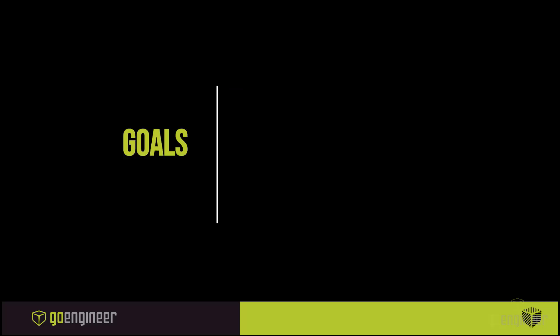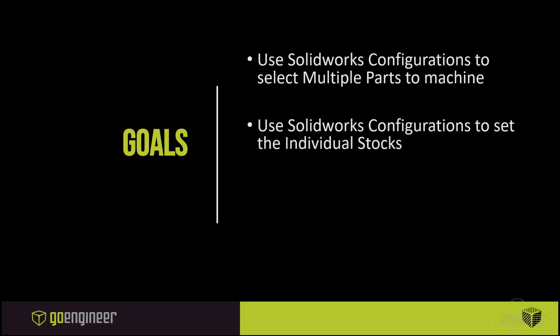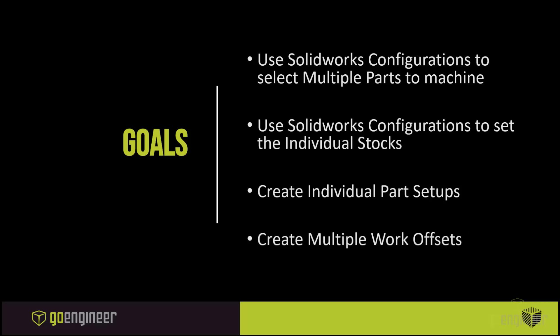For today's discussion, our goal is to cover using SolidWorks configurations and selecting multiple parts to machine. Another topic we're going to discuss is using SolidWorks configurations to set the individual stocks. The great thing about SolidWorks CAM and SolidWorks CAM Professional is the ease of use and the power behind using SolidWorks configurations to set up our machining parameters. We'll be setting up individual part setups — three part setups for this particular model — and creating multiple work offsets.